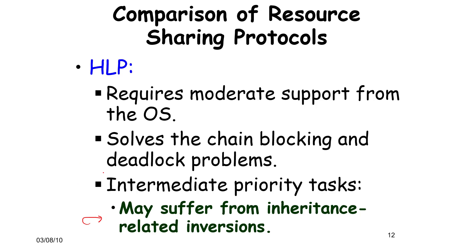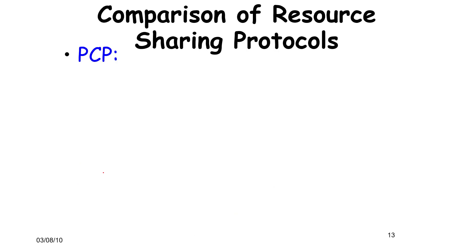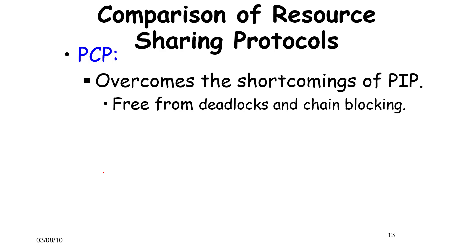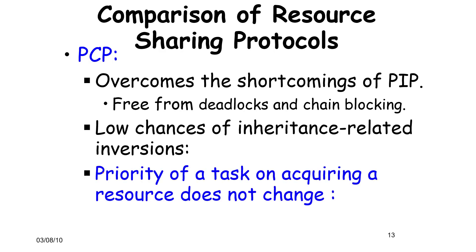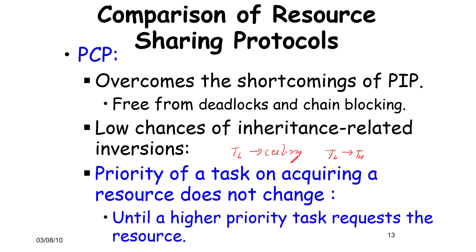PCP we claim solves everything in the sense it overcomes the shortcomings of PIP: no deadlocks and chain blocking. It reduces the chance of inheritance related inversions compared to HLP because we don't raise the priority of TL to the ceiling, but instead we raise the priority of TL to TH. So the priority of a task on acquiring a resource per se does not change. It increases only when somebody is waiting for it, when a high priority task requests for the resource. Then the priority changes. It's not the case in HLP. You just acquire and your priority becomes massive. That's not the case.